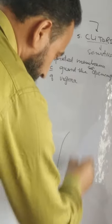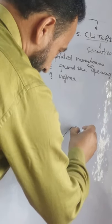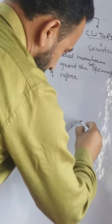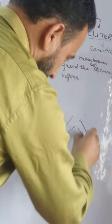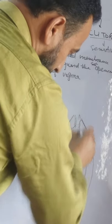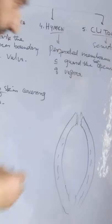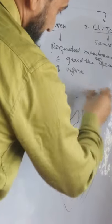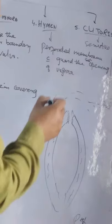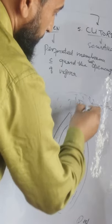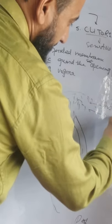Now we will understand the whole structure with the help of a diagram. It consists of mons pubis. In the diagram, labia majora are the two folds of skin covered by hair. Above this is the anterior end, and below is the posterior end. The pubic region just above is mons pubis, covered by pubic hair.